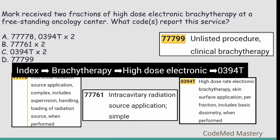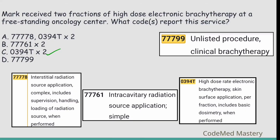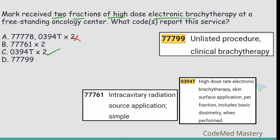You can find this answer in the index of the CPT manual under brachytherapy, high dose electronic: 03940. The right answer is option C. The code is multiplied twice because the scenario mentions two fractions, and 03940 is per fraction. Under 03940 there is a parenthetical note: do not report 03940 in conjunction with 77778, so option A is wrong. Option B (77761) is for intracavitary radiation source application, not high dose electronic brachytherapy, so option B is also wrong. Option D is for unlisted procedure, which is also wrong.